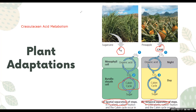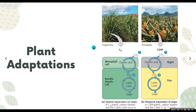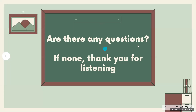To summarize: C3 is the normal Calvin cycle with no separation; C4 plants have carbon fixation in the mesophyll cell and the rest in the bundle sheath cell; and CAM plants have carbon fixation at night and the rest of the Calvin cycle during the day. Are there any questions?